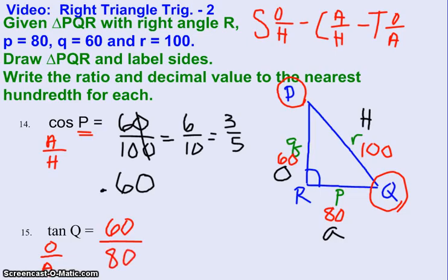So that would be my ratio. You certainly could reduce that to 6 over 8, or to 3 over 4, and then when you punch that in a calculator, it becomes 0.75. So the ratio is the fraction, and then the decimal to the nearest hundredth is 0.75.